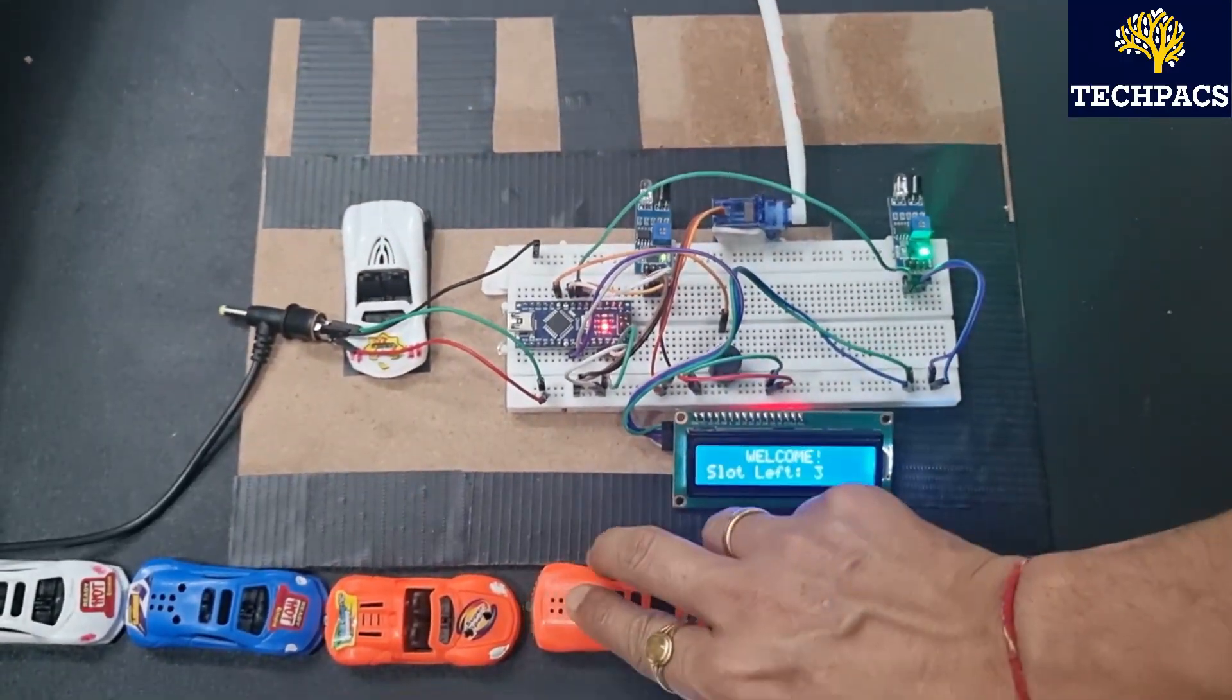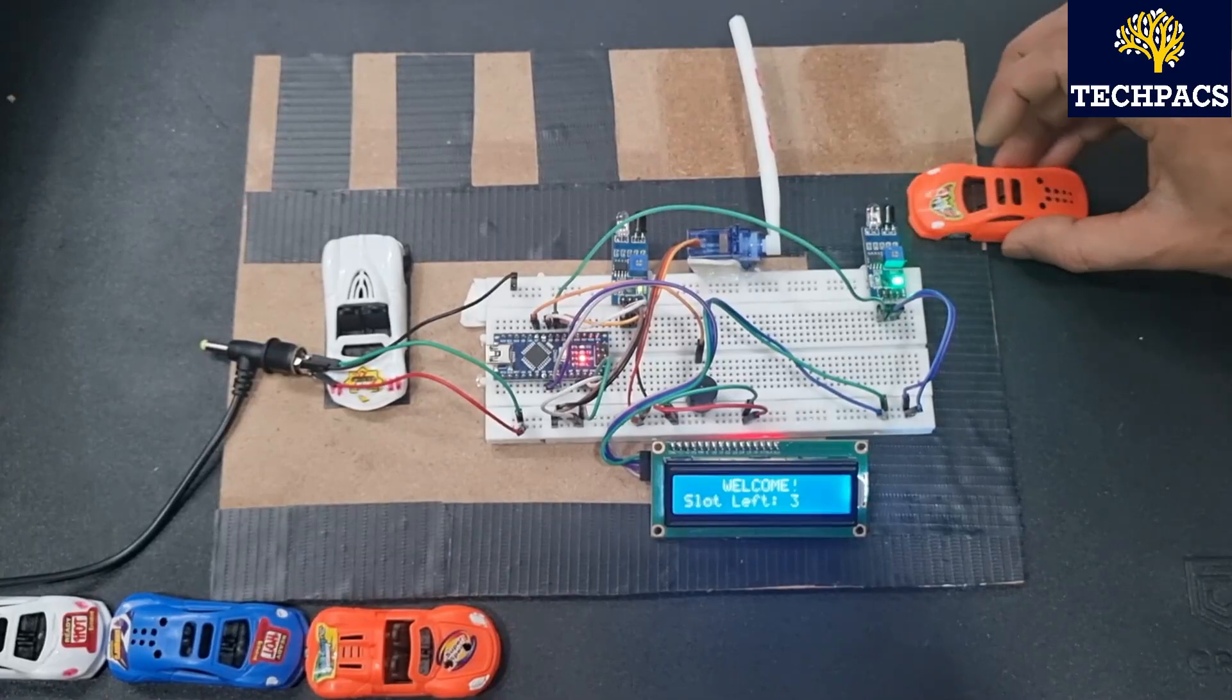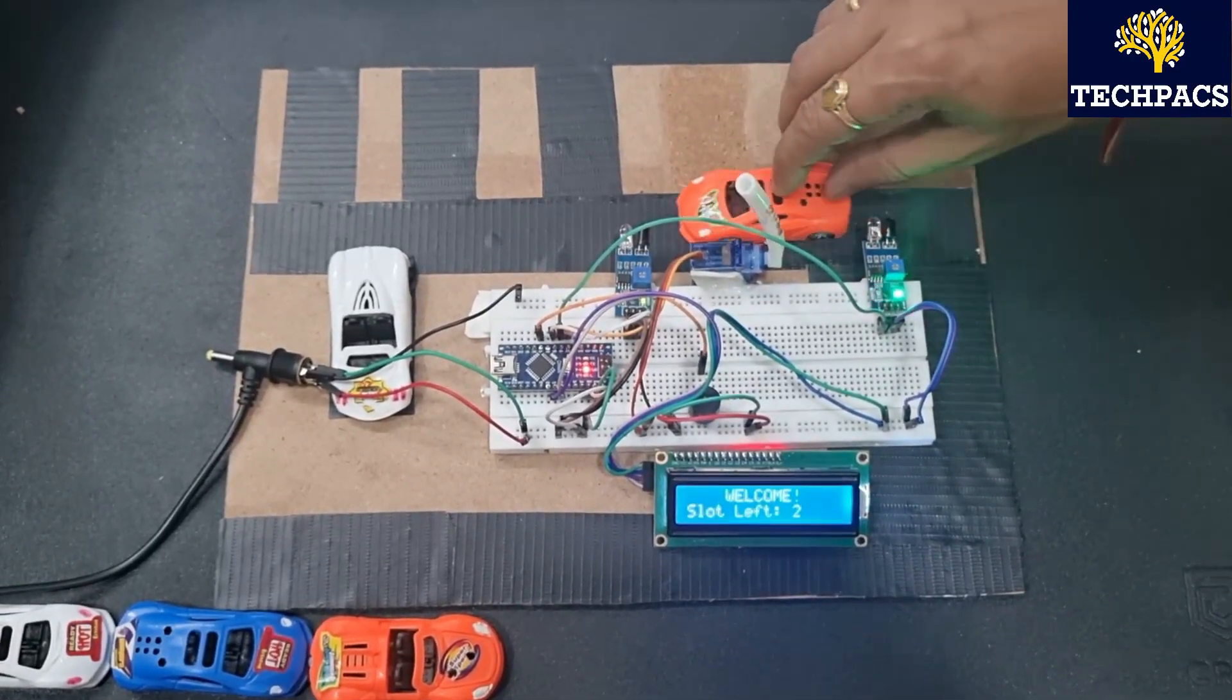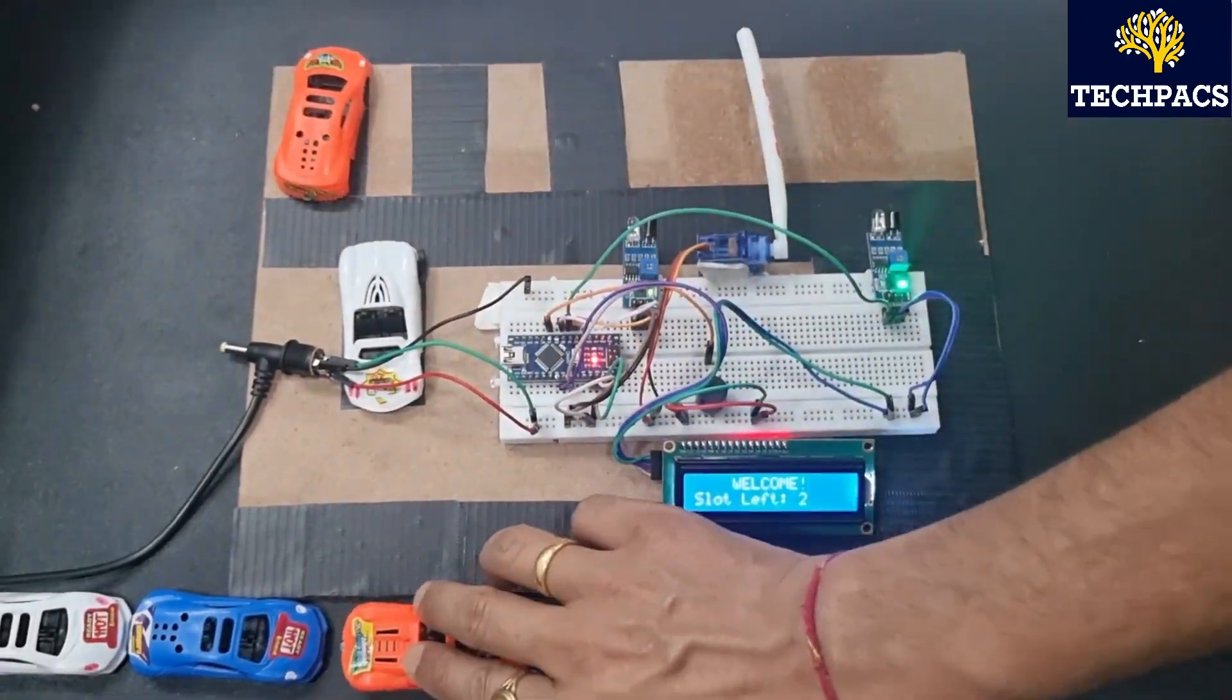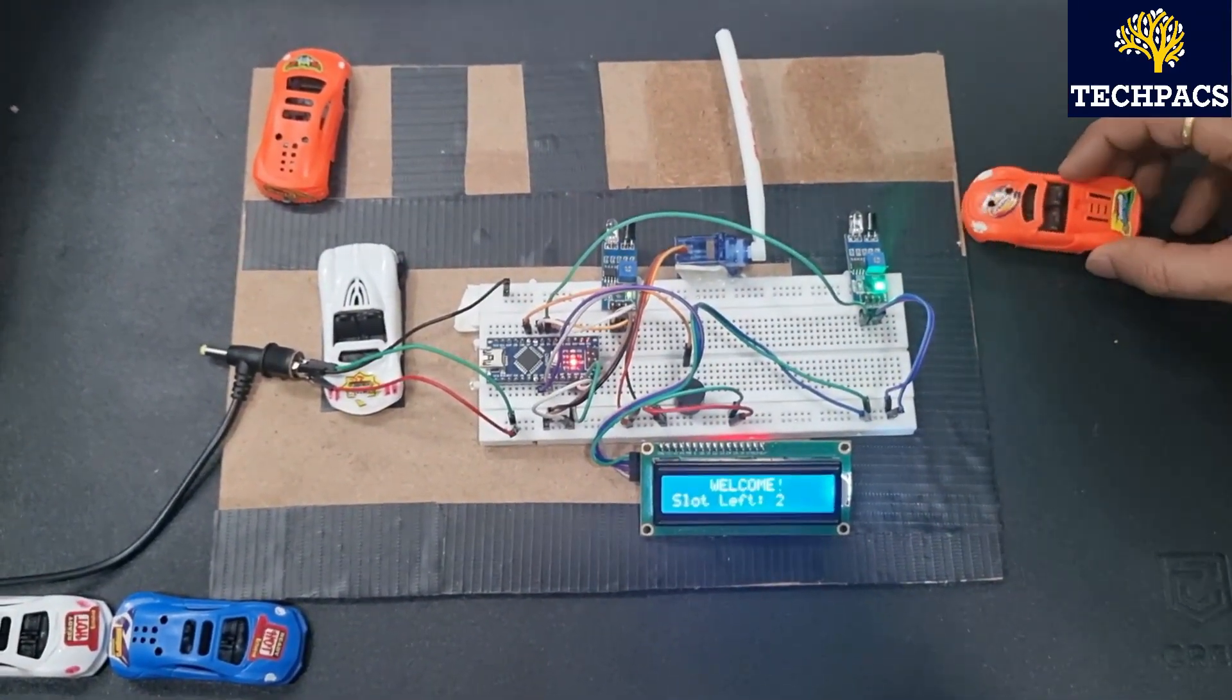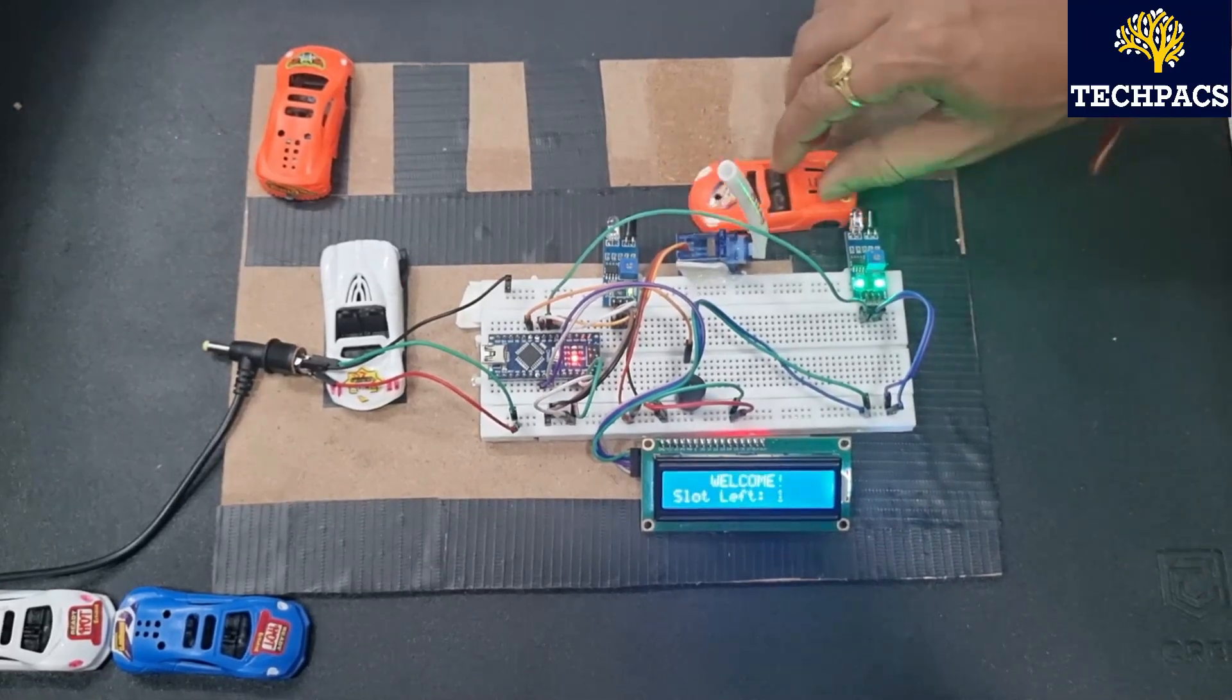Similarly second car. Since we have three slots left now, as soon as the second car has entered we have two slots left. Here the sensor again detects the presence of the car, and the slot left is one.